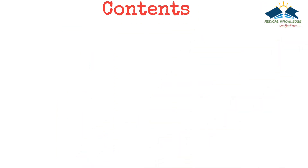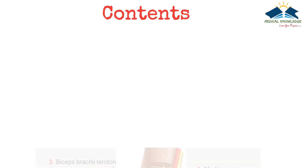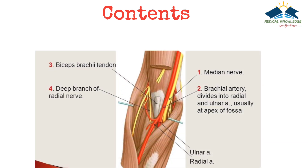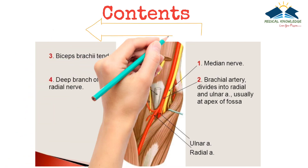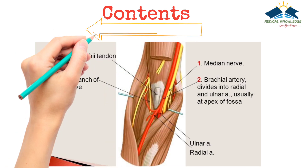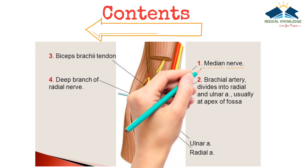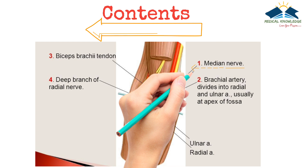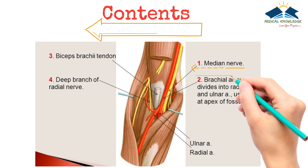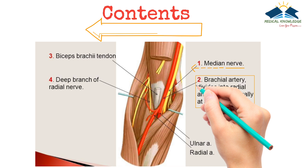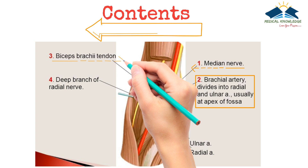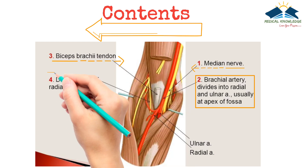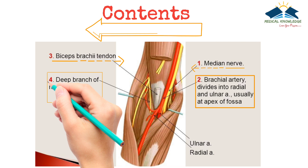The cubital fossa is a passageway for structures to pass between the upper arm and forearm. From medial to lateral side, the contents are as follows: first, the median nerve, which gives nerve supply to various muscles and leaves the fossa; second, the termination of the brachial artery and beginning of the radial and ulnar arteries; third, the tendon of the biceps brachii with the bicipital aponeurosis; and fourth, the radial nerve, which gives nerve supply to the supinator muscle then leaves the fossa by piercing it.